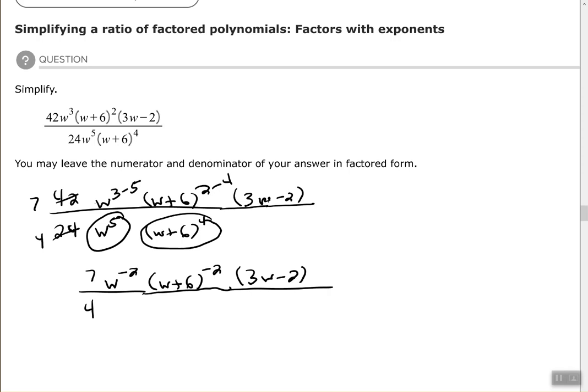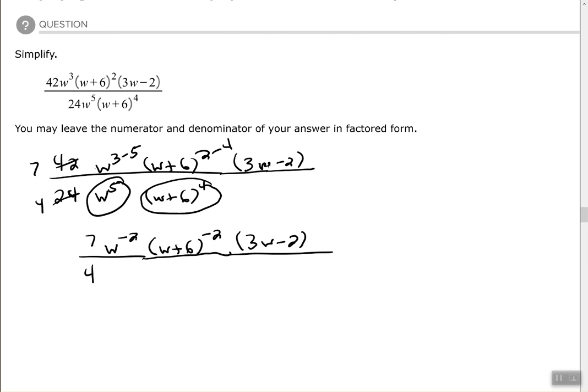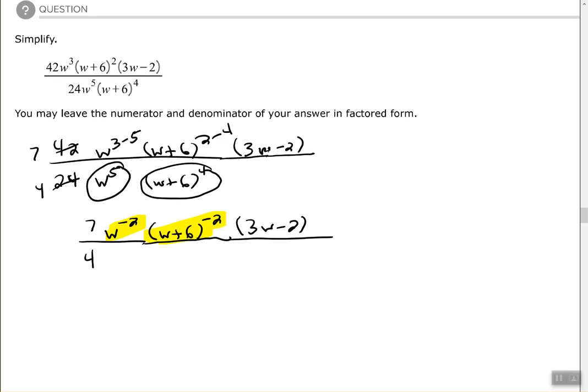Okay, so we've cleaned that up a whole lot. We've combined those. We simplified the numbers, simplified the monomial of W to the third over W to the fifth, and simplified the binomial of W plus six over W to the fourth. Now we want to get rid of those negative exponents. We want to move the bases with the negative exponents to the opposite place of where they originally are and make the exponents positive.